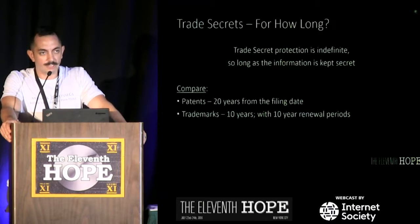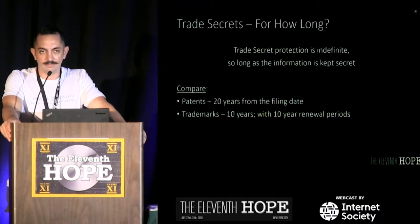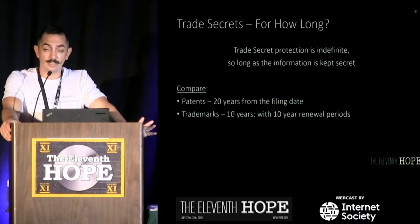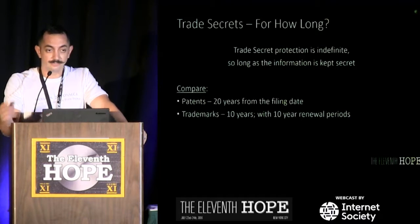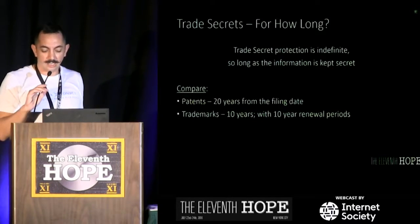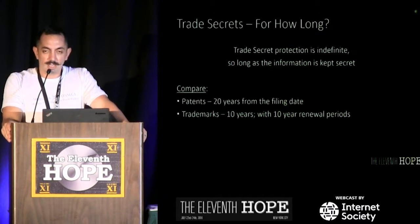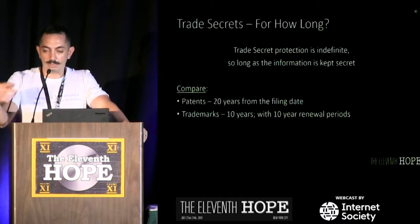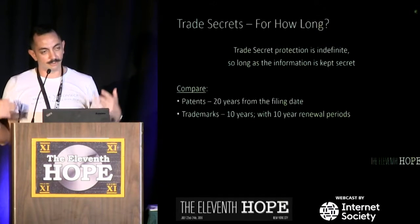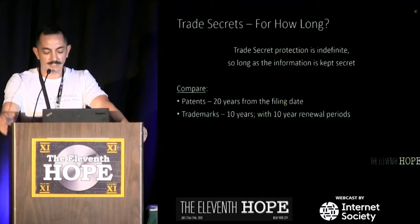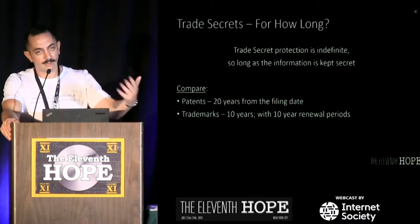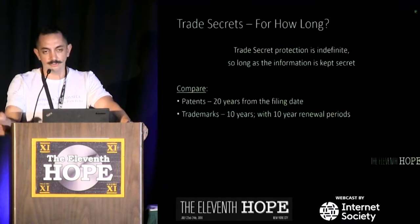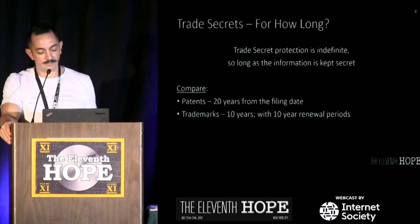Trade secret protection differs tremendously from patents and trademarks because its protection is indefinite. So long as it remains secret and there's economic value being derived from it, it can be sued over if misappropriated. The secret recipe to Coca-Cola is a classic example — it's not patented because patents only have a 20-year shelf life from the filing date. Trademarks can persist longer but need to be renewed every 10 years with proof of actual use.